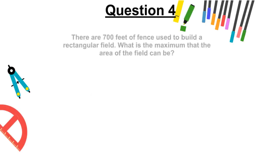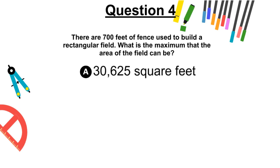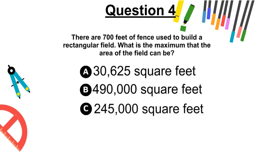Question 4. There are 700 feet of fence used to build a rectangular field. What is the maximum that the area of the field can be? A, 30,625 square feet, B, 490,000 square feet, C, 245,000 square feet, or D, 61,250 square feet.